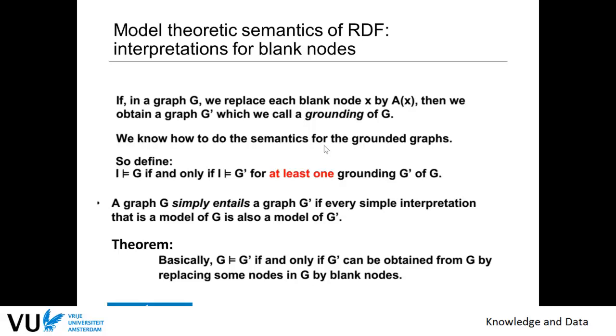So the only thing that really matters for you is that basically a graph entails another graph if and only if this other graph can be obtained from G by replacing some nodes in G by blank nodes, and then we take any subset of this G star is then entailed.